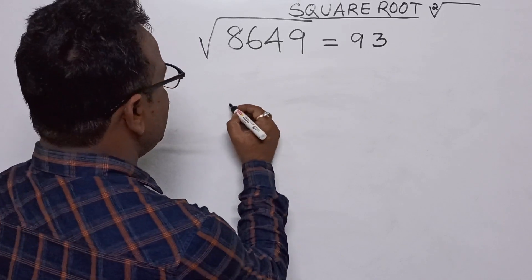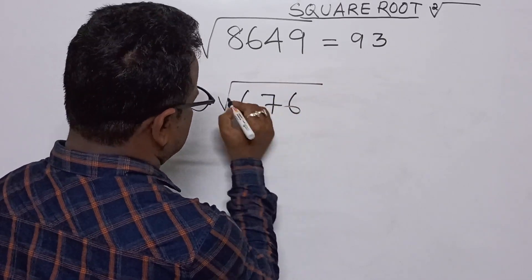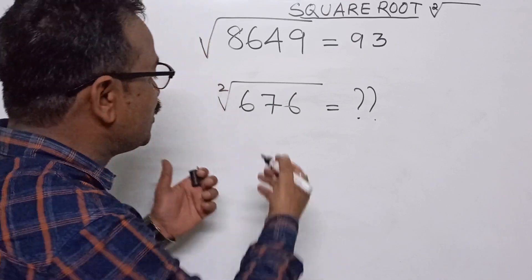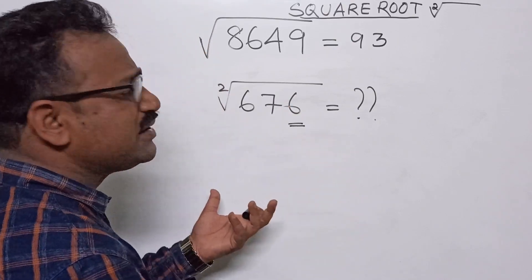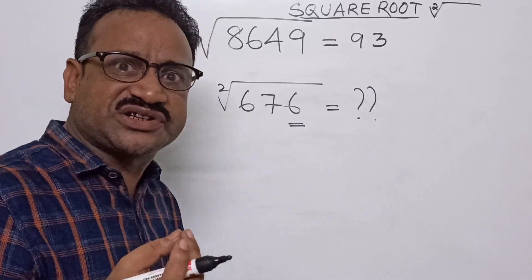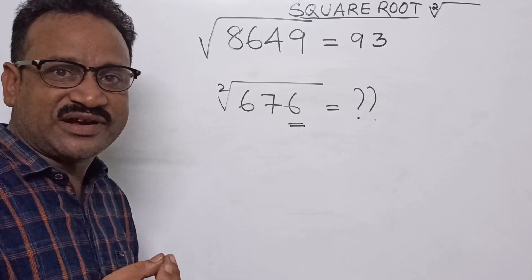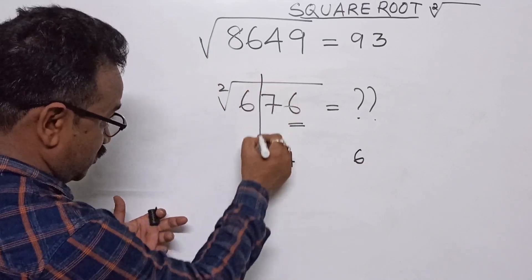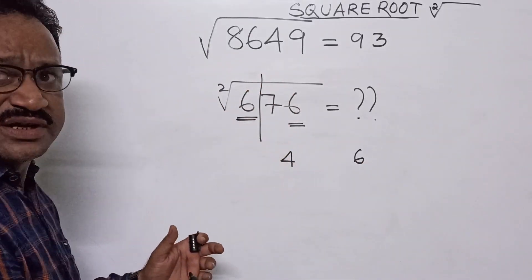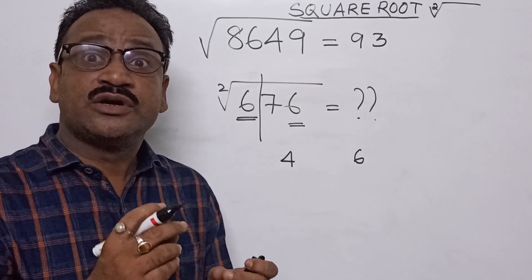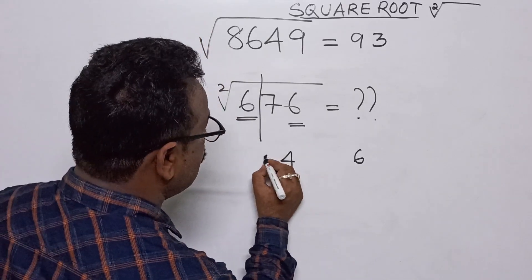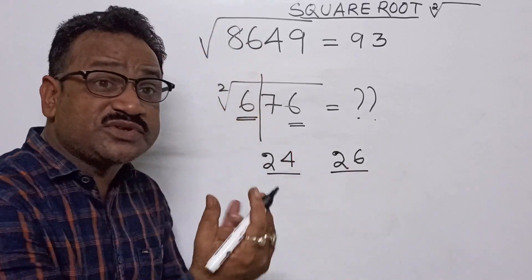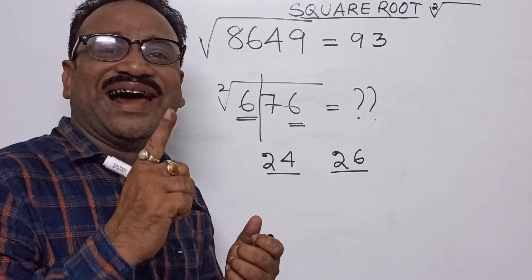Let's take another example: √676. Last digit is 6, so possible last digits are 4 and 6 (since 4²=16 and 6²=36, both end in 6). Cut it. What is left? 6. Nearest perfect square: 2²=4, 3²=9 — so 2. Possible answers are 24 or 26.